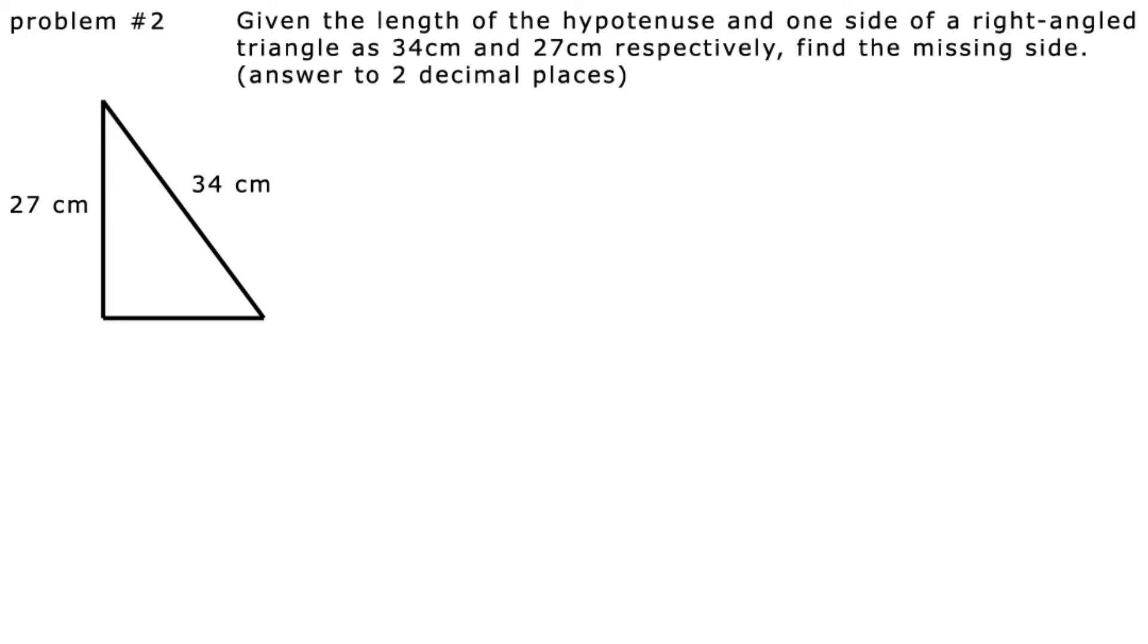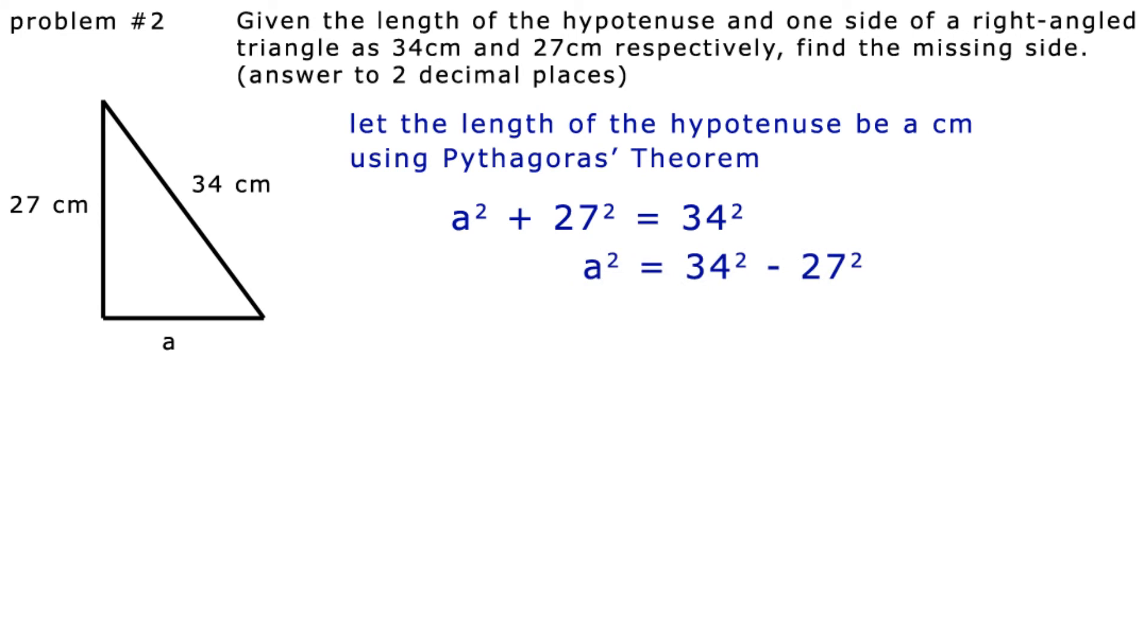Let the length of the hypotenuse be a cm. Using the Pythagoras' theorem, a squared plus 27 squared equals 34 squared. Taking the 27 squared to the other side and changing the sign, we have a squared equals 34 squared minus 27 squared.